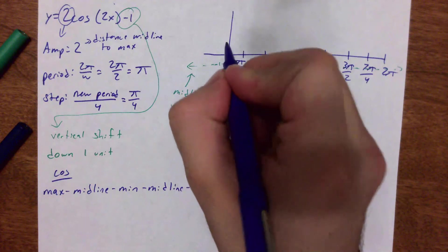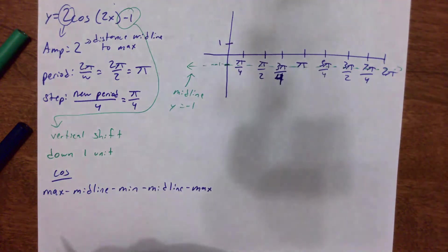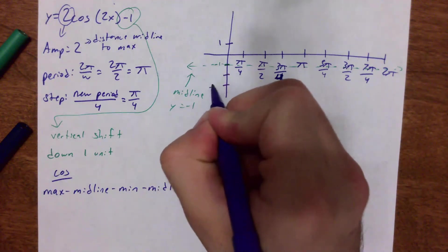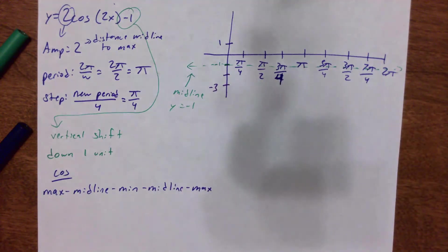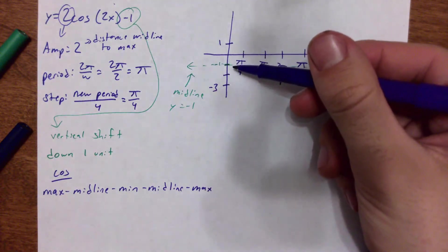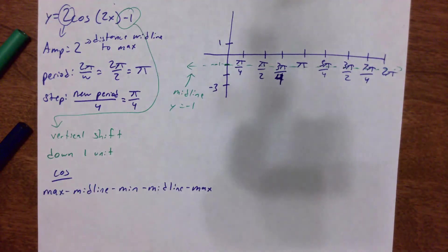So now that I've moved my midline to negative 1, my maximum is going to be 2 units away. So 1, 2, it goes to positive 1. It's also the distance to the minimum. So I'm going to go down 1, 2. So they're at different spots on 1 and negative 3, and that's okay. It's because my midline has been shifted down 1. Alright? So always use your midline first.